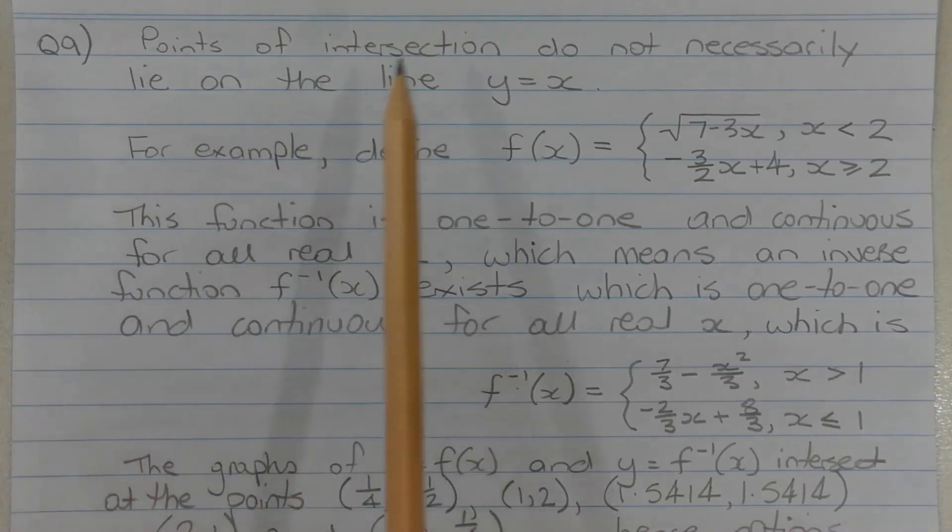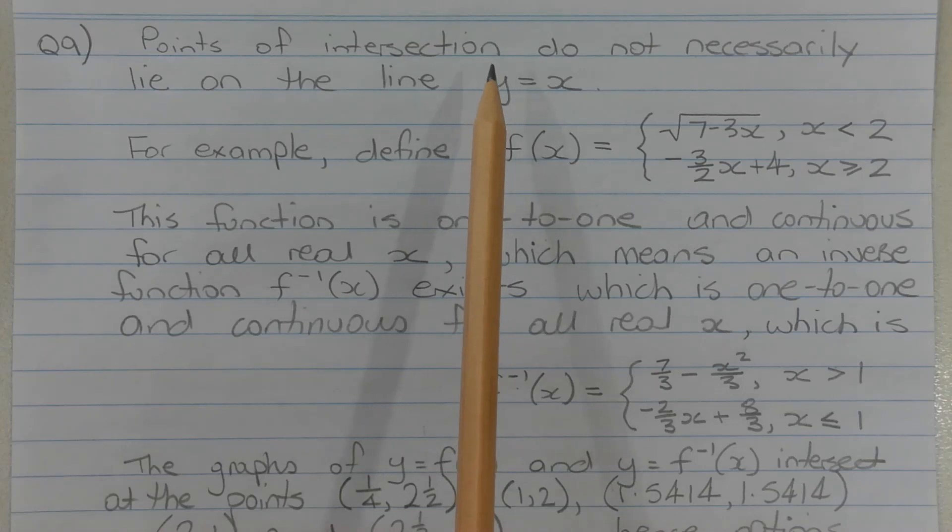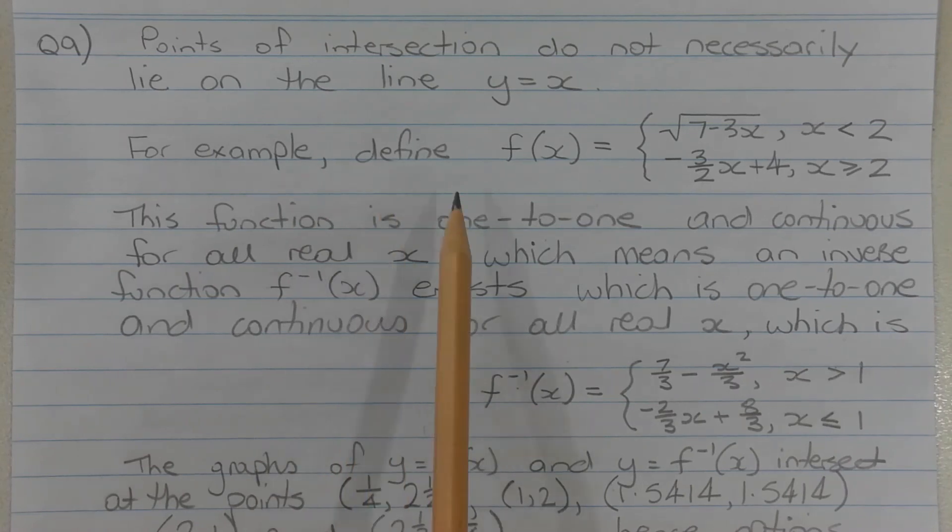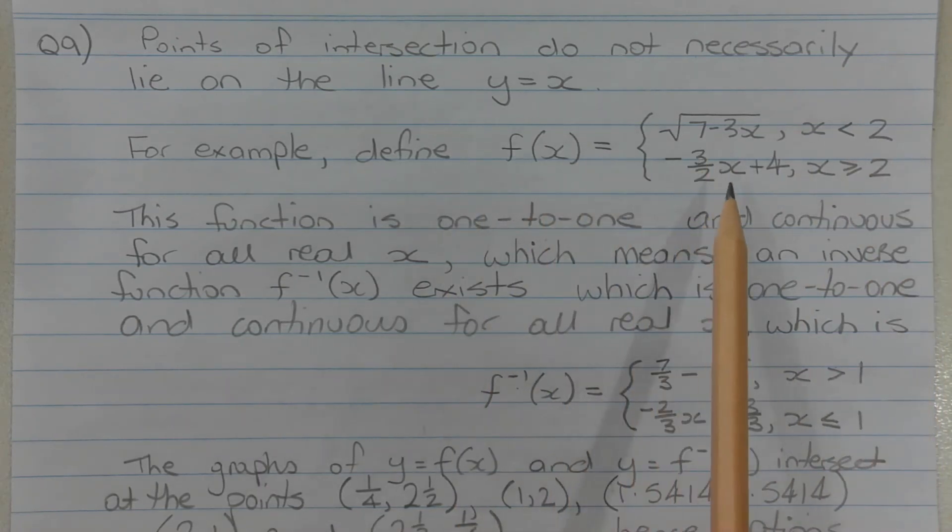The points of intersection of the graph of a function and its inverse do not necessarily lie on the line y = x. Take for example the piecewise function f(x) equals the square root of 7 minus 3x for x less than 2, and f(x) equals negative 3 over 2x plus 4 for x greater than or equal to 2.